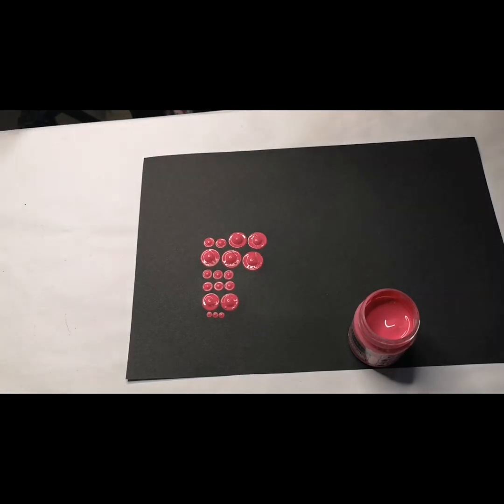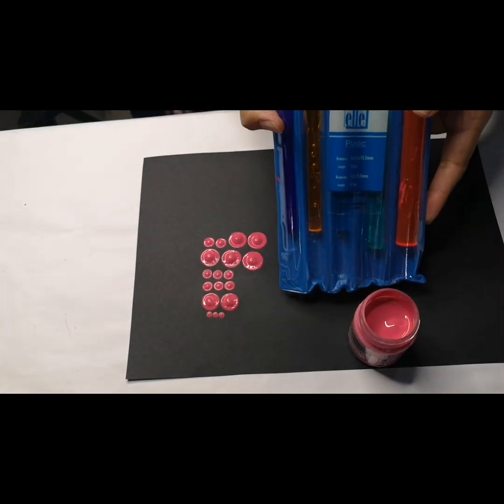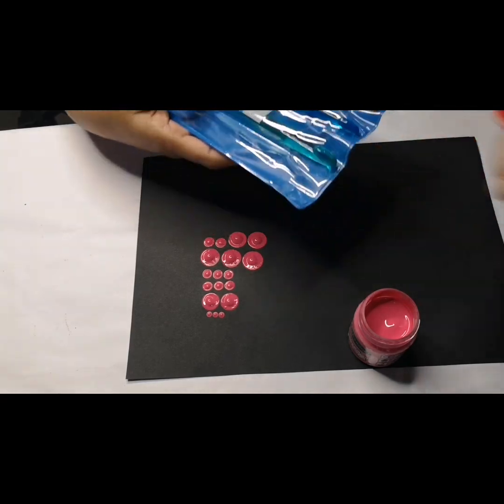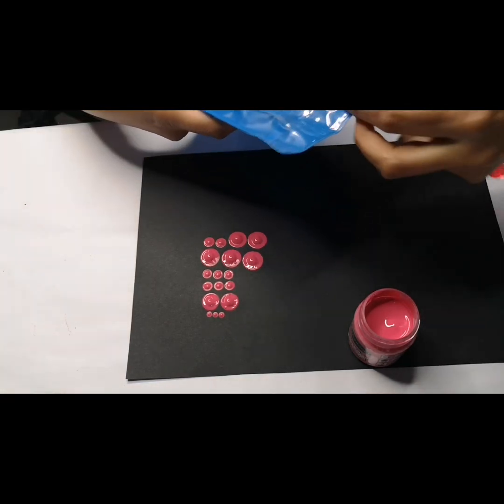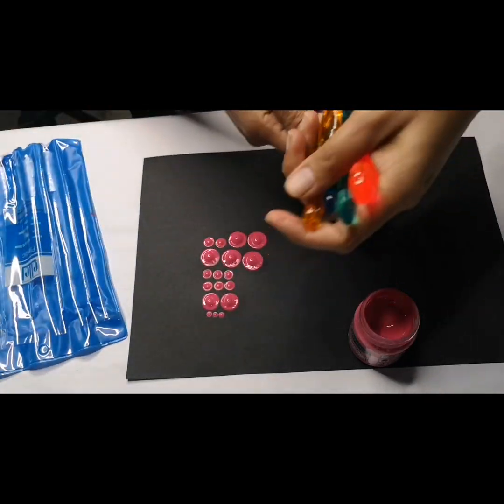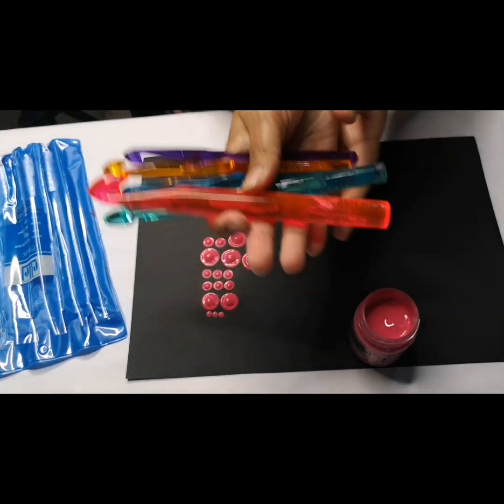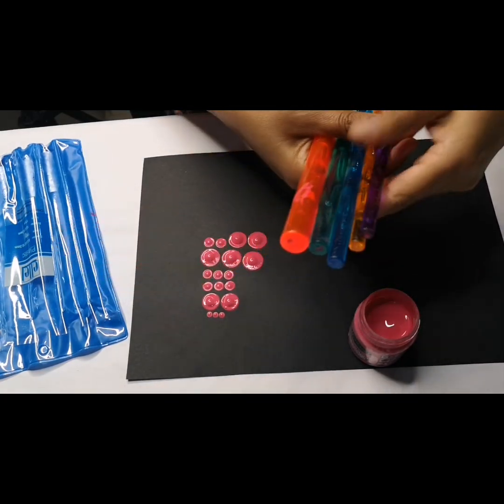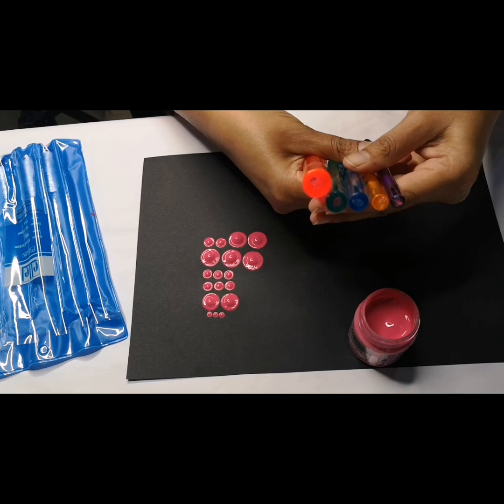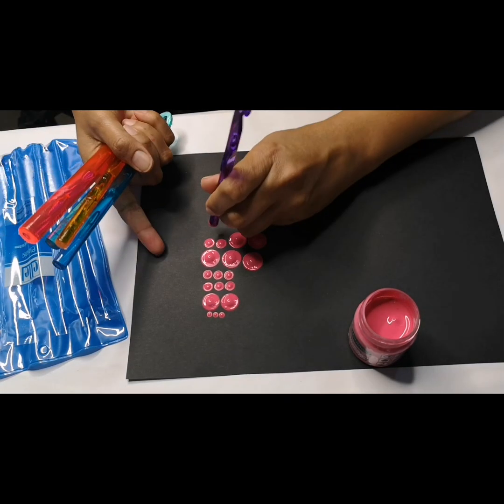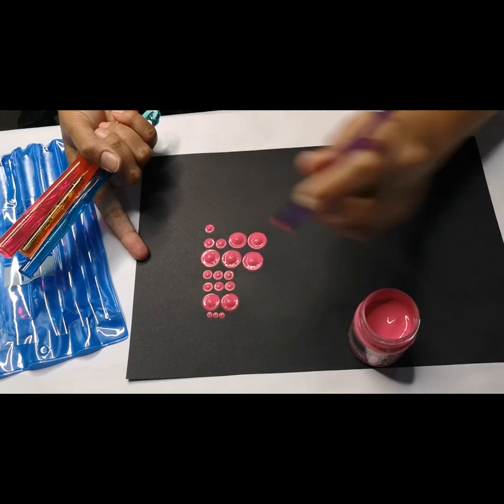Something else that works really well is these plastic crochet hooks. They look like this—in this set there's five different sizes. We use the flat ends, not the hook ends. So these as well, we just dip and place a dot.